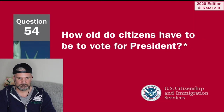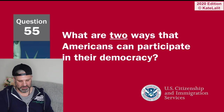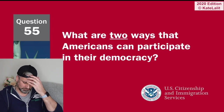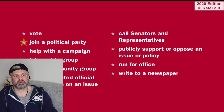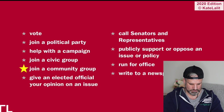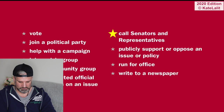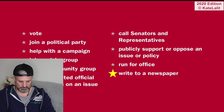How old do citizens have to be to vote for president? Eighteen and older. What are two ways that Americans can participate in their democracy? Run for office, vote — join a political party, run for office, vote, join a civic group, join a community group, give an elected official your opinion on an issue.